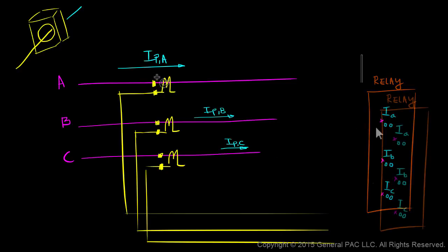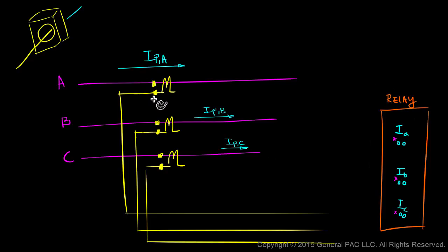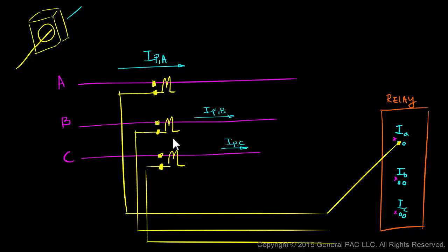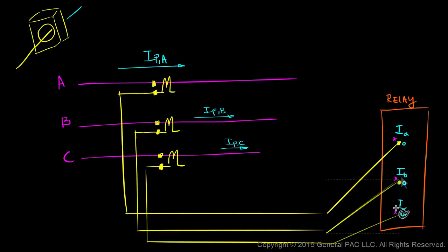The polarity side of our phase A CT, which is this lead here, should be connected to the polarity input terminal of our relay. Similarly, we'll have the polarity side of our phase B CT connected to the polarity input terminal in our relay. And lastly, we'll do the same thing for phase C.